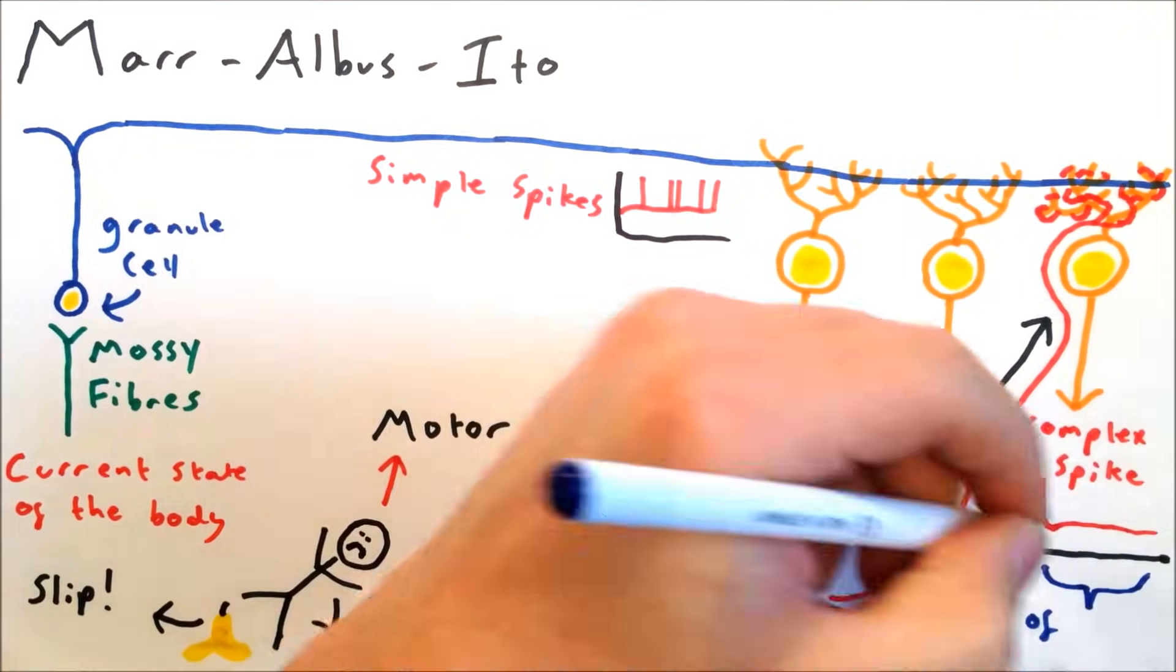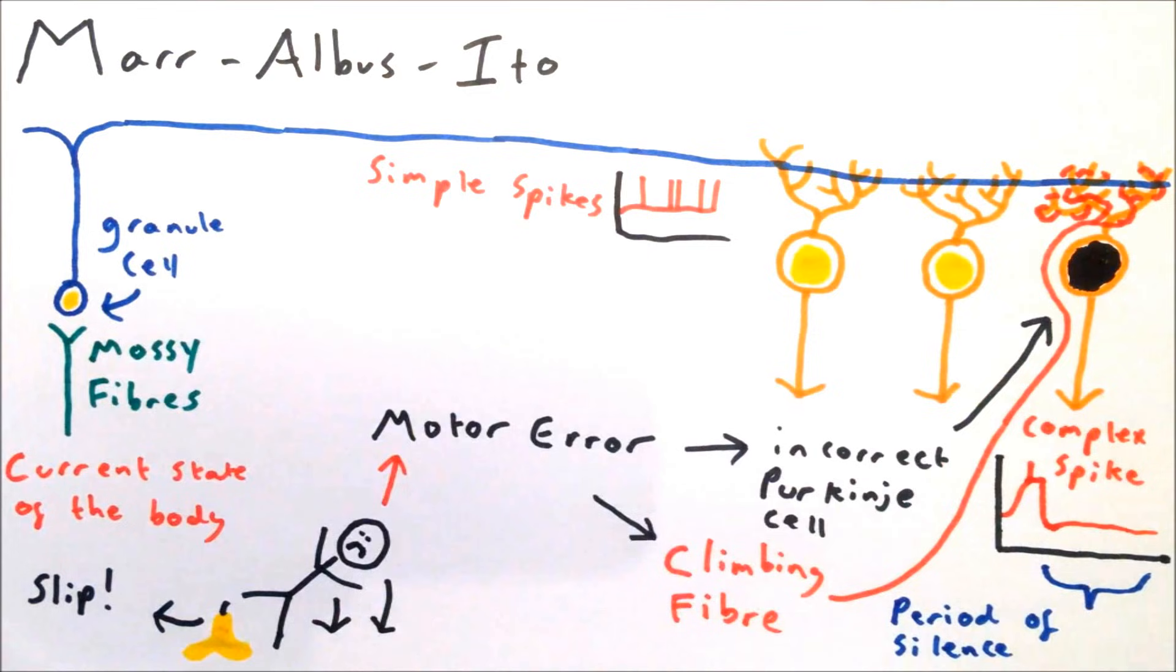This triggers a complex spike in the Purkinje cells, and for a brief period of time after this spike, the Purkinje cell is prevented from firing, silencing a cell which presumably was contributing to the body making that motor error.